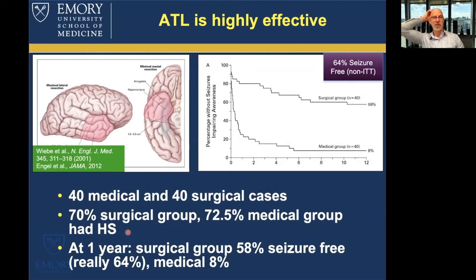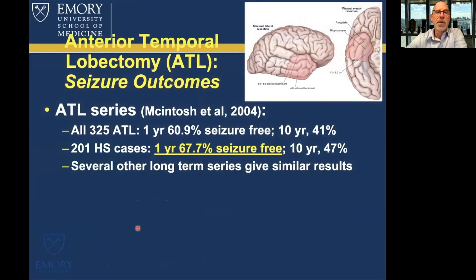It's important to note that about 70% of patients in this group had hippocampal sclerosis, which is well known to respond better to surgical treatment. So for a pure hippocampal sclerosis or mesial temporal sclerosis (MTS) group, outcomes might be even better, while patients without MTS might do somewhat worse. This has also been studied in non-randomized trials — in a review by McIntosh of 325 patients, approximately similar results were found, though out to 10 years there is a fall-off in effectiveness at five and ten years.